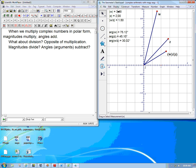Here's an example where the magnitude of w is 3, it's 3 units away from the origin. Magnitude of z is 2.